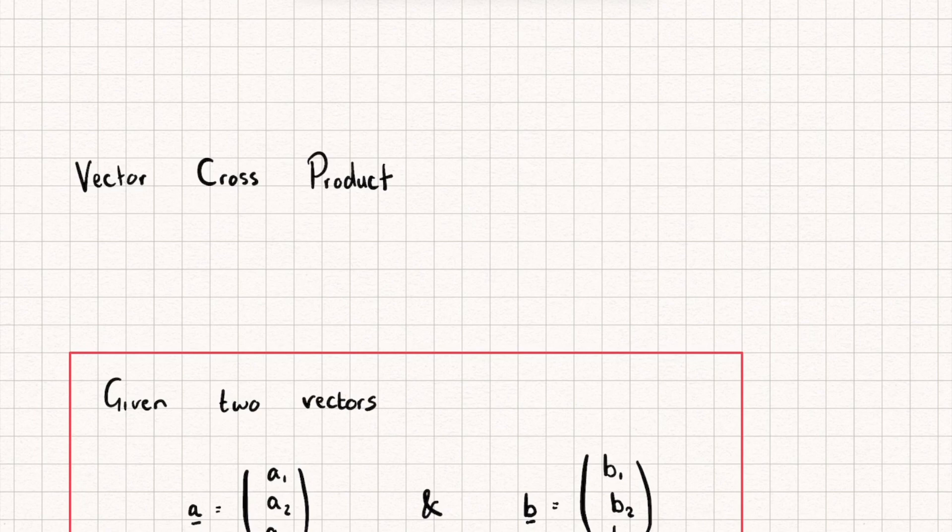Now the difference is the vector cross product is a similar way of multiplying two vectors, except it's going to return a new vector. And this new vector has a very special property.